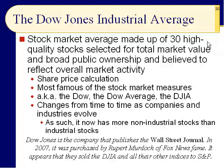The Dow Jones Industrial Average is a stock market average made up of 30 high-quality stocks selected for total market value and broad public ownership, believed to reflect overall market activity. Well, it doesn't — it's only 30 companies and it's not the best measure. But it's what everyone uses, so we're stuck with it. It's the most famous, and it changes from time to time as companies and industries evolve. Now it has more non-industrial stocks than industrial stocks, so they should just change the name.